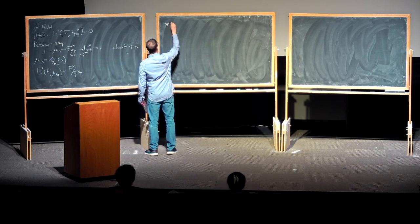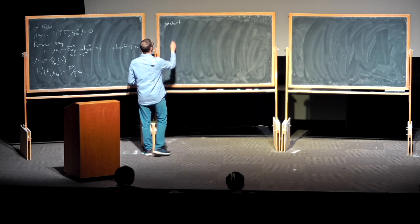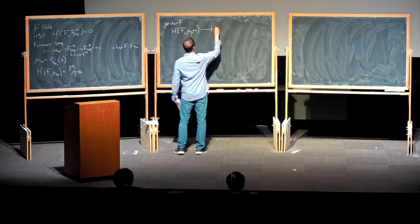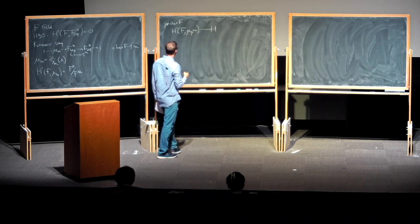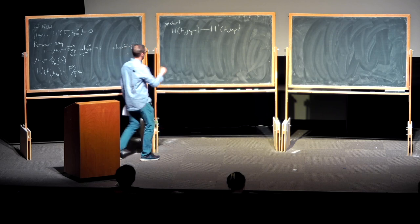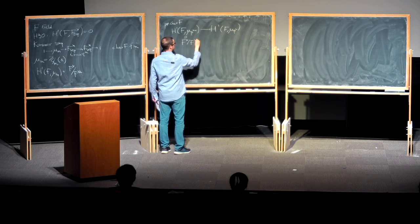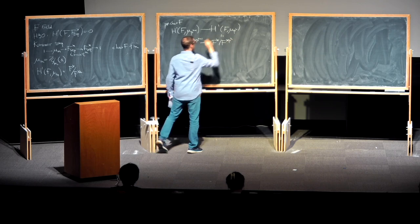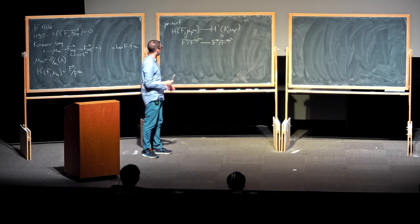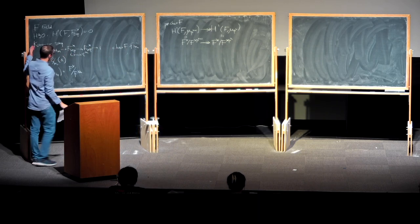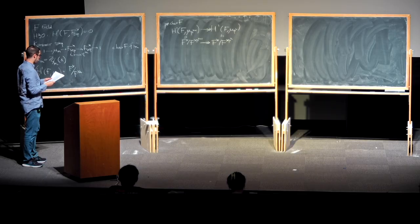If we take Galois cohomology of this sequence and combine with Hilbert 90, we get H1(F, μ_m) ≅ F* mod (F*)^m. In particular, if we take a prime P different from the characteristic of F, then the reduction map from H1 with μ_{P^{n+1}} coefficients to H1 with μ_{P^n} coefficients is surjective — it is the map between the two quotient groups induced by the identity of F*, so it is surjective. This setup is called Kummer theory.